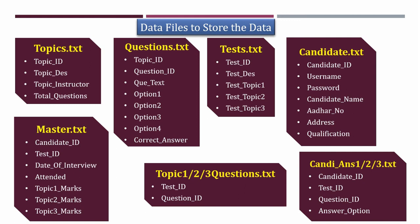We also need a master file which stores the candidate test ID, date of the interview, and whether the candidate attended — by default set to 'N', updated to 'Y' if attended. The master file also stores marks for topic one, topic two, and topic three based on the respective candidate answer files, and the final score is released and visible to the candidate. In total, we need 11 data files: topics, question, test, candidate, master — that's five — plus three topic question files and three candidate answer files.